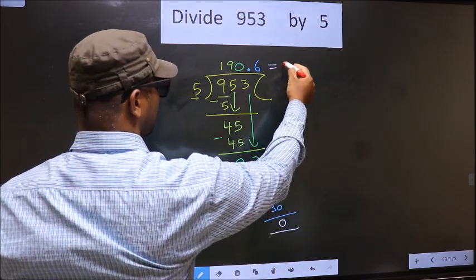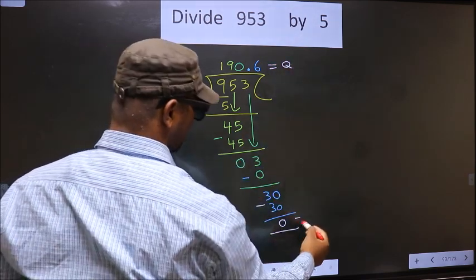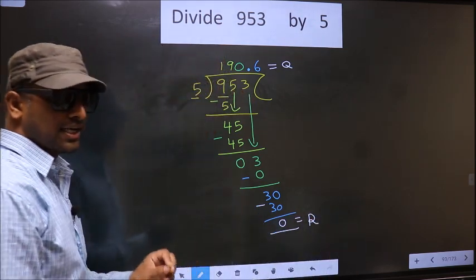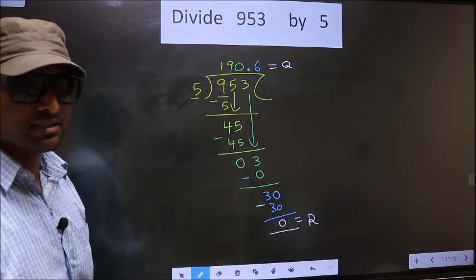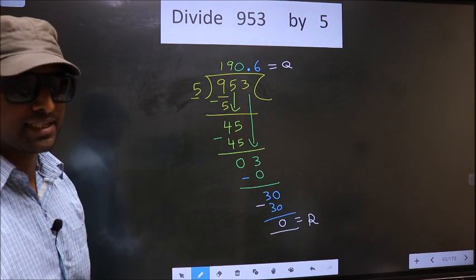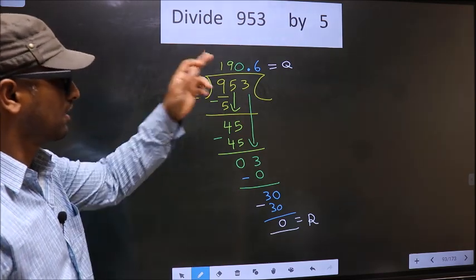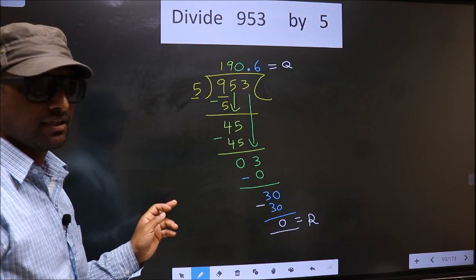So this is our quotient and this is our remainder. Did you understand where the mistake happens? You should not do that mistake. Am I clear?